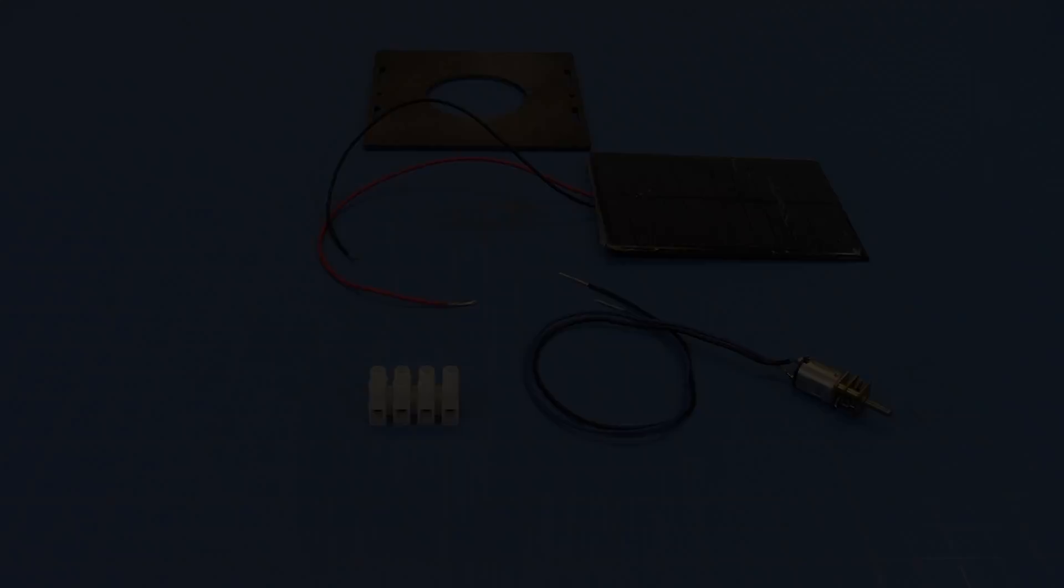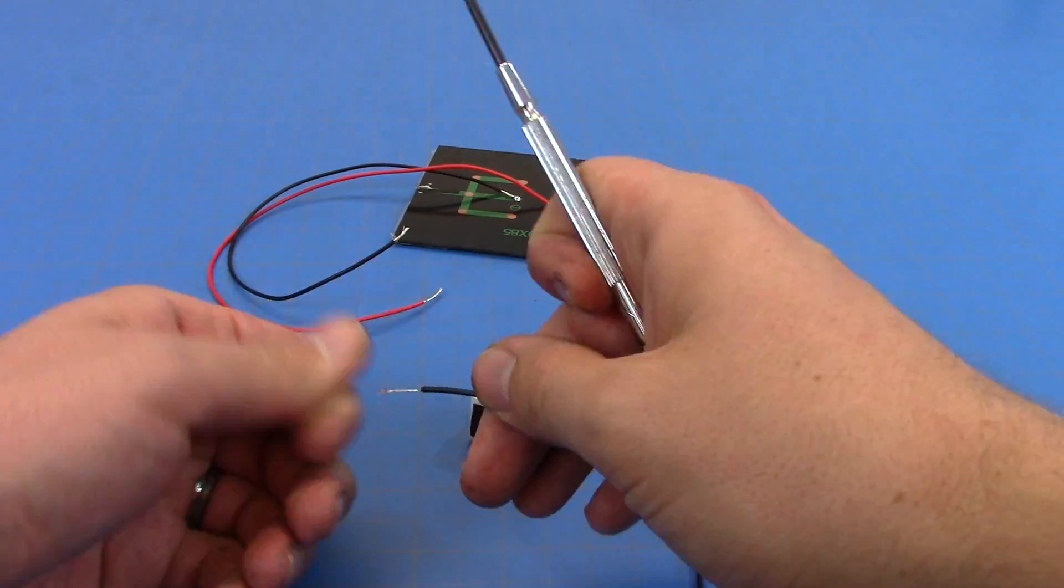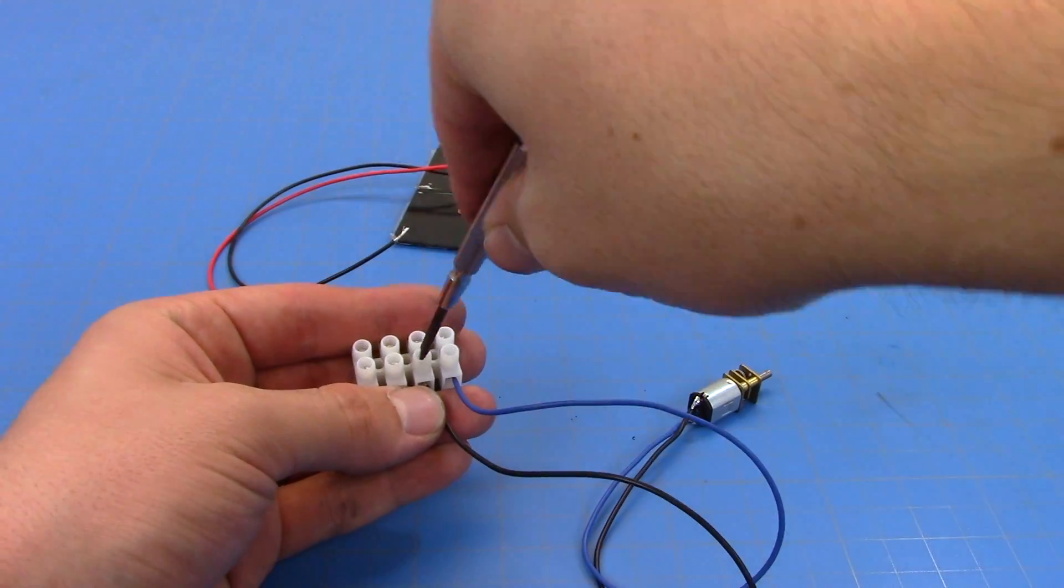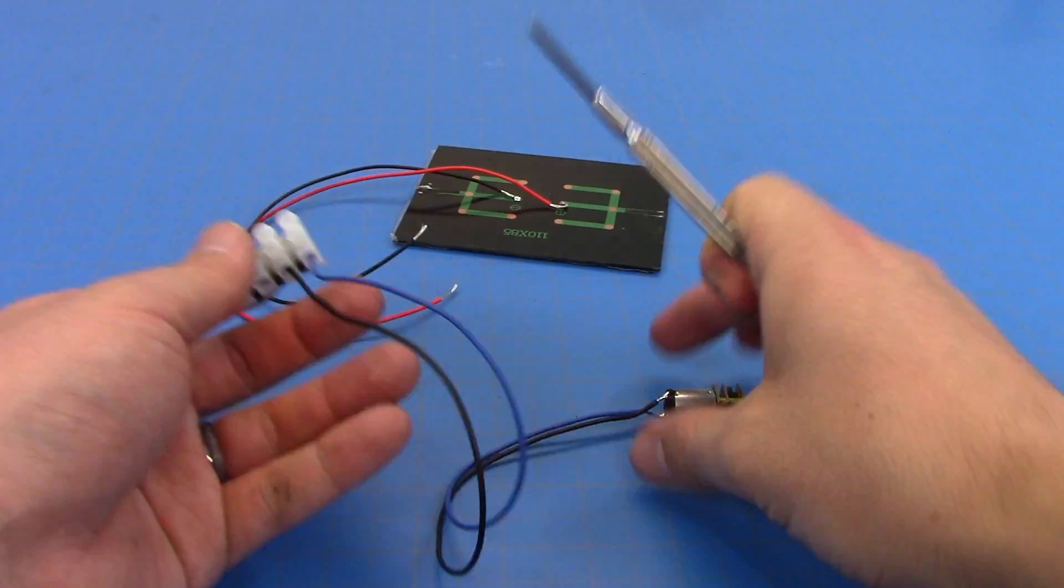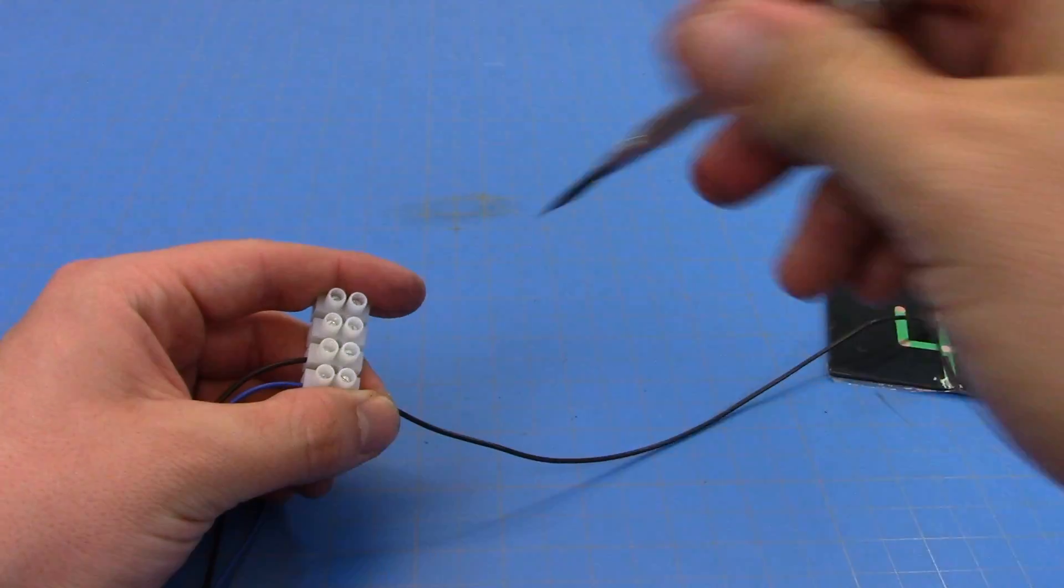While we wait for the paint to dry, we can work on the wiring. This project only uses half of our four-port terminal block. The trick here is to wire the positive side of the solar panel to the negative side of the motor, which will make it turn in reverse. Don't worry though, when we're done, our racer will drive forwards.